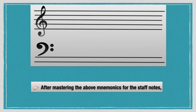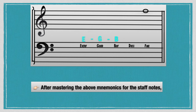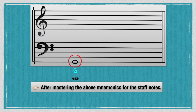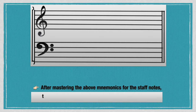The Ledger Line Notes. After mastering the above mnemonics for the staff notes — like FACE, Every Good Boy Does Fine, All Cows Eat Grass, and Good Boys Do Fine Always — the next step is to master the notes above and below the staff.